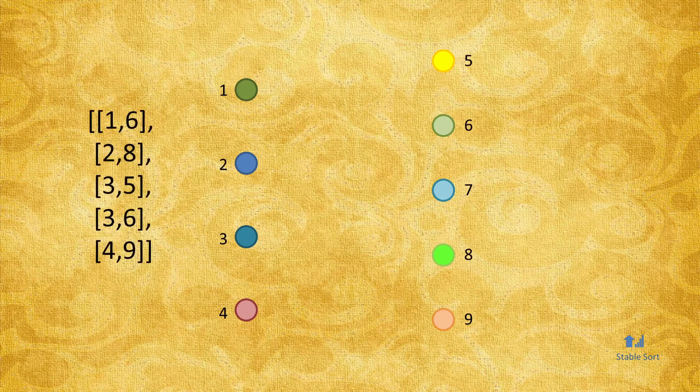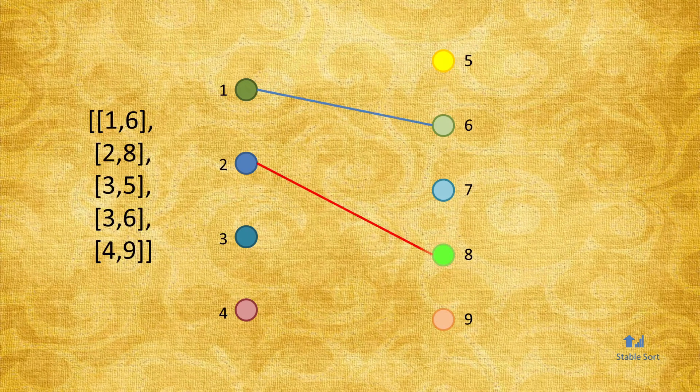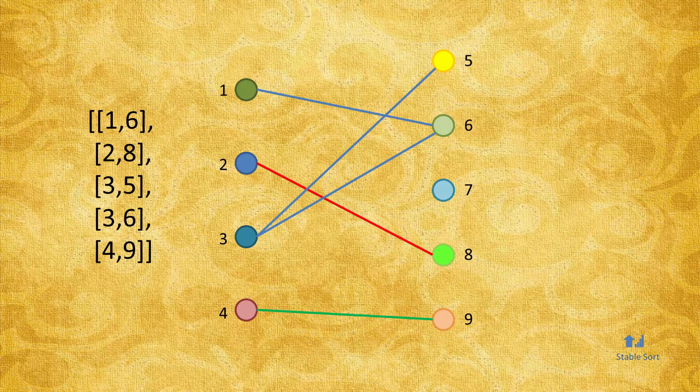In this illustration, lines connecting two users indicate that those two users are friends and thus form a group. When a user from one group makes a friend with a user from another group, then those two groups become connected, and from that point on, they are considered to have been merged into a single large group, meaning all of the users in that one large group are now friends with one another.